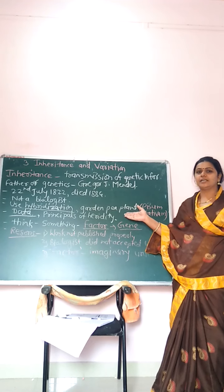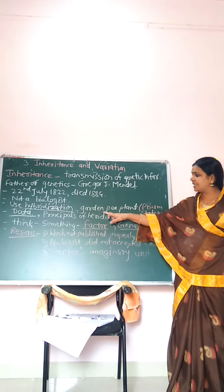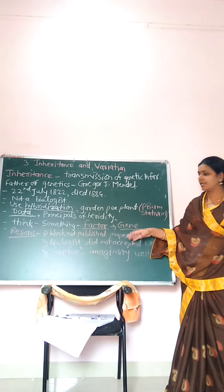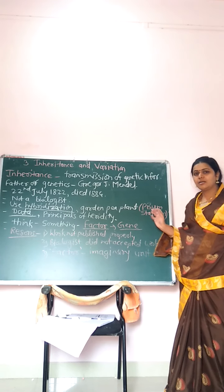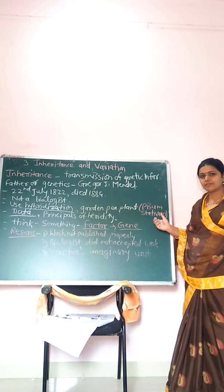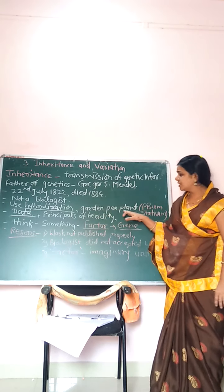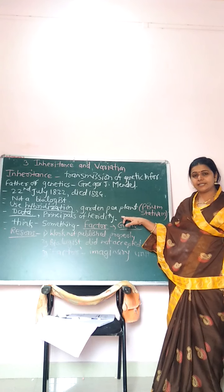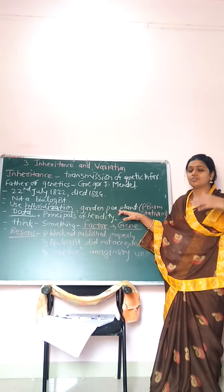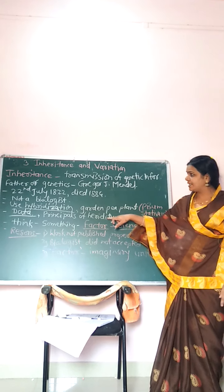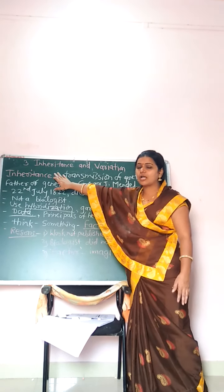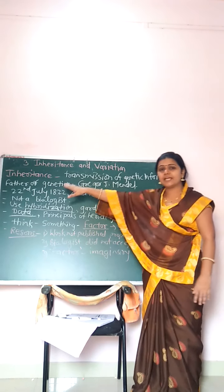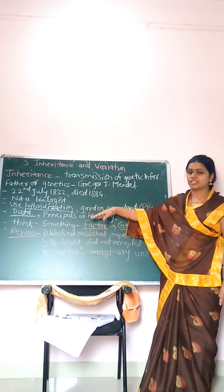The material Mendel used for his work was the garden pea plant, called Pisum sativum. He explained various principles of heredity — how characters transfer from generation to generation. Inheritance is also called heredity, meaning the transmission of characters from generation to generation. He explained the various types of laws and principles of heredity.